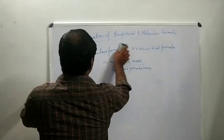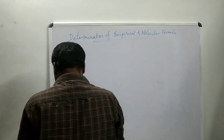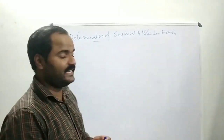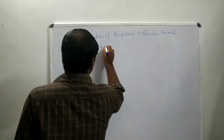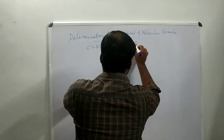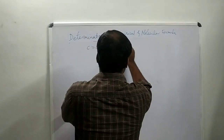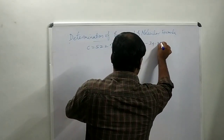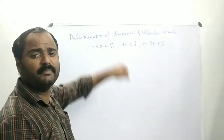Now we can see one question. From percentage composition, we can find out the empirical formula of a compound. An organic compound on investigation gives carbon 52.2%, hydrogen 13%, and oxygen 34.8%. Find out the empirical formula of the compound.